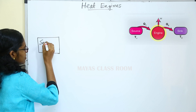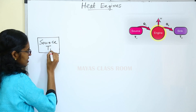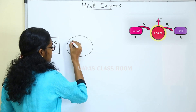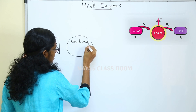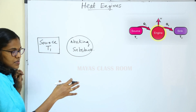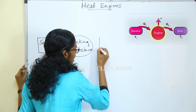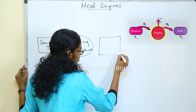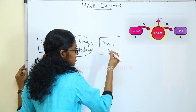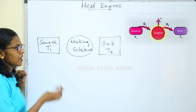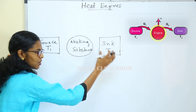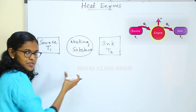It consists of a source at high temperature. Then there is a working substance which undergoes a cyclic process. There is a low temperature reservoir called the sink. The temperature of the sink is T2. So, the heat engine has a source at high temperature, then a sink at low temperature, and a working substance.